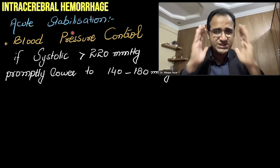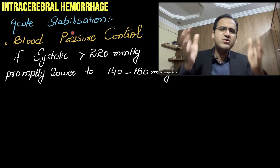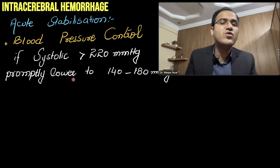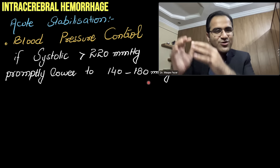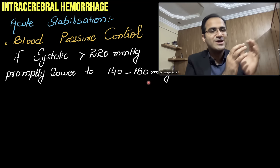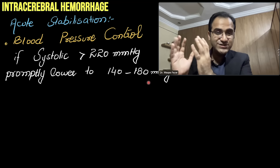In acute stabilization, blood pressure control is the next most important step. If systolic blood pressure is greater than 220 mmHg, promptly lower it to 140–180 mmHg. Note that in ischemic stroke, the approach to blood pressure is totally different — we allow permissive hypertension. But in hemorrhagic stroke, we rapidly lower blood pressure to reduce the bleed.